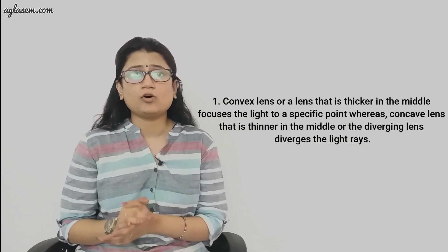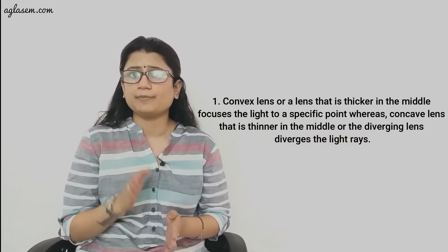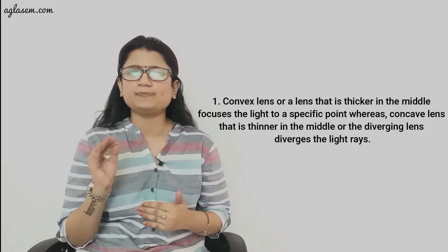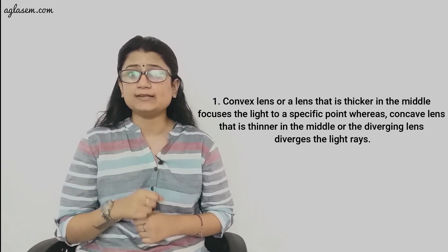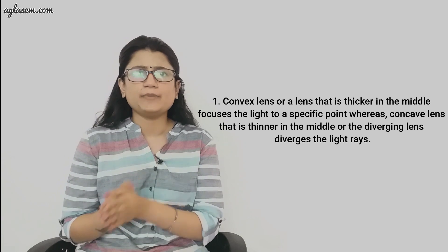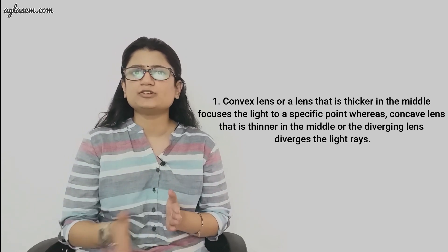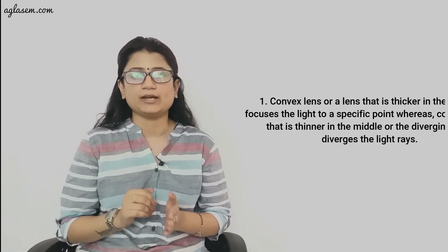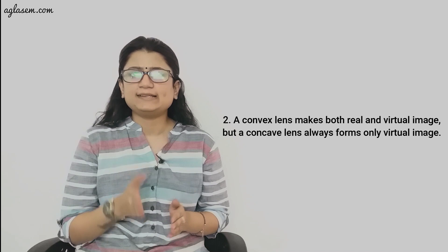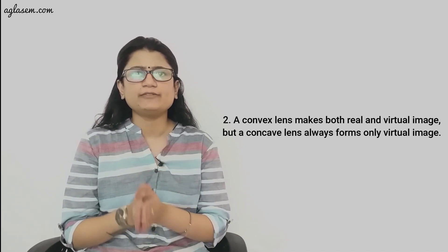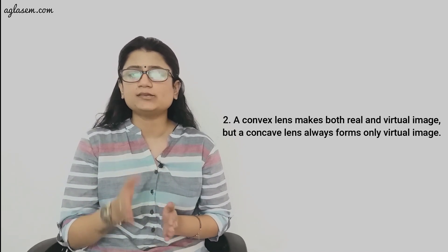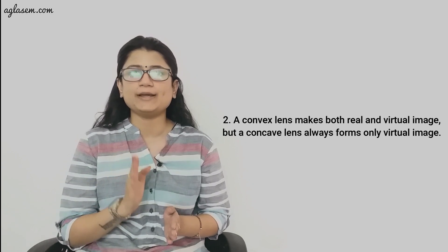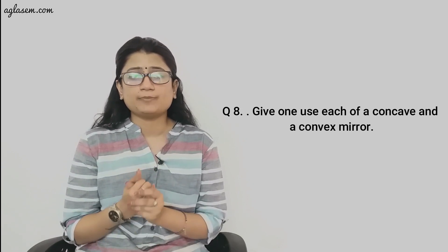Question 7: State two differences between a convex and a concave lens. First, a convex lens is thicker in the middle and focuses light to a specific point, whereas a concave lens is thinner in the middle and diverges the light rays. Second, a convex lens can form both real and virtual images, but a concave lens always forms only a virtual image.